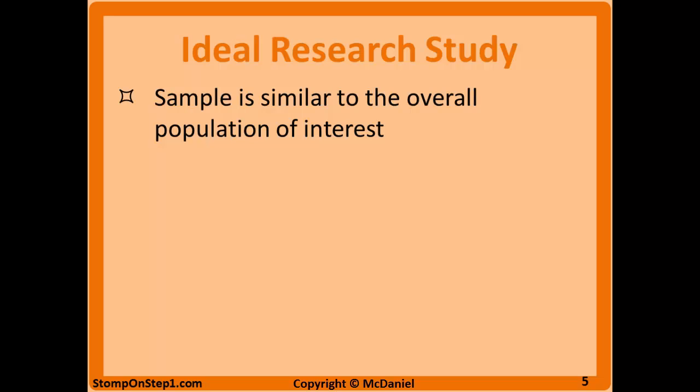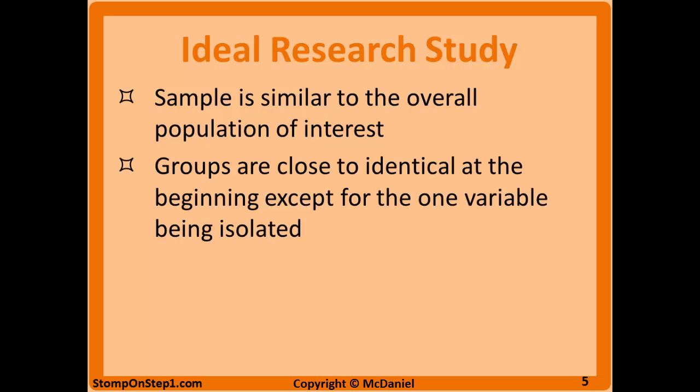The first thing on this list is that the sample population in the study is similar to the overall population of interest — this means there's high external validity or high generalizability. The second thing is you want the groups to be close to identical at the beginning of the study except for whatever variable you're trying to isolate. For example, if you're studying a treatment, you want the control group and the treatment group to be very similar at the beginning, which reduces the chance for confounding. The next thing is you want a low loss to follow-up, meaning patients not finishing the study — they may move away from the city where the study is being conducted or change their phone number so you're not able to contact them.